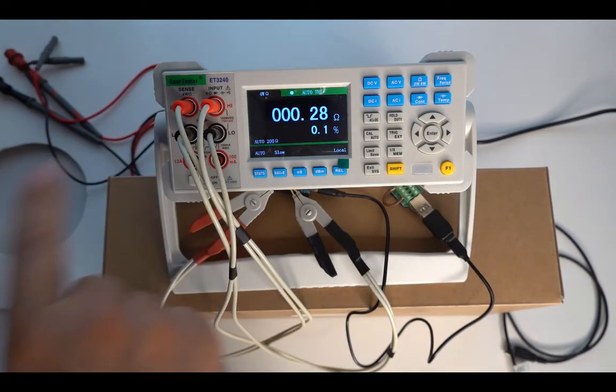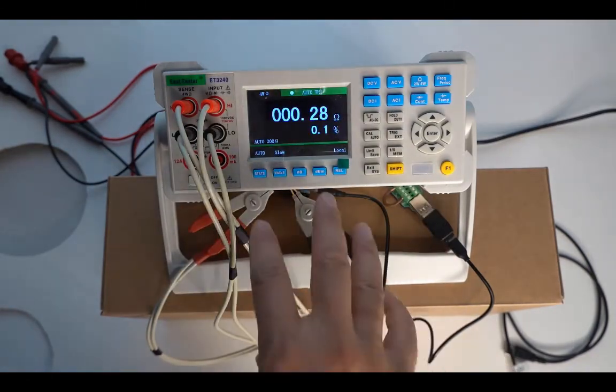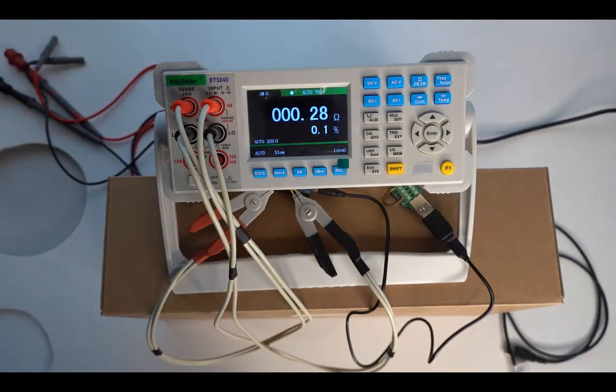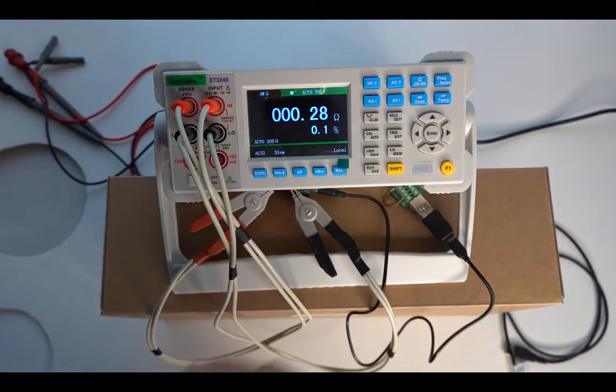And the advantage here of the four-wire method is that the resistance of the wires and the clips here don't count. They are negated. And this is done by having two wires with low impedance that carry the power to make the measurement, and then two other wires with high impedance to do the actual measurement.